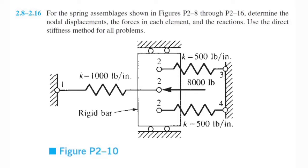All right, what's going on everybody? This one looks a little bit more complicated, but it's really not. Let's go ahead and get started with it. So it says for the spring assemblages shown, determine the nodal displacements, the forces in each element, and the reactions using the direct stiffness method.